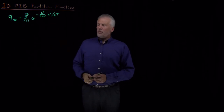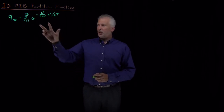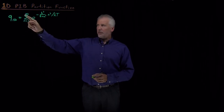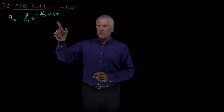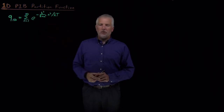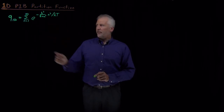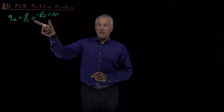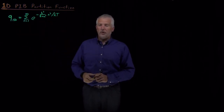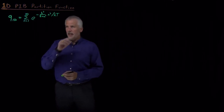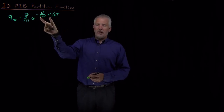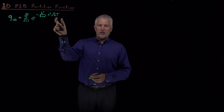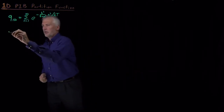We're going to compute the value of that sum, but first let's ask ourselves how many terms we need to include. The sum goes out to infinity, but when n is large the terms become very small, so only some terms will contribute. Equivalently, we could ask how big is Q. If Q is large, we use many terms; if it's small, relatively few. That's also equivalent to asking how big are these energy levels compared to kT — is the numerator in the exponent larger or smaller than the denominator?